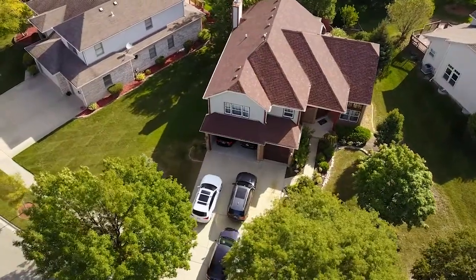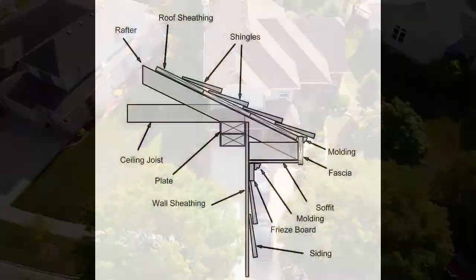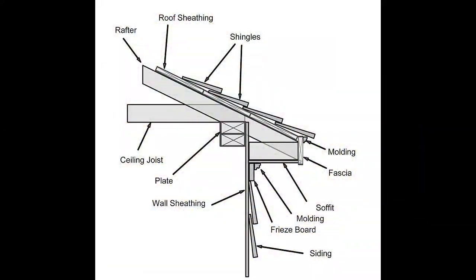Let's understand what a soffit is and what it does for a home. The soffit is part of the overhang where your roof meets the siding — it is underneath the overhang, between the roof's edge and the side of your home. It ventilates the attic and prevents rafters from rotting. The roofing fascia has an equally important role: fascia boards are fitted over the end of your home's rafters or trusses, serving as a barrier between your roofline and the elements. This is also where the gutters are placed.